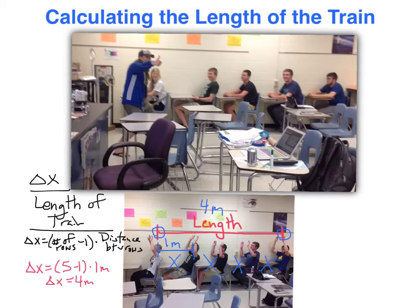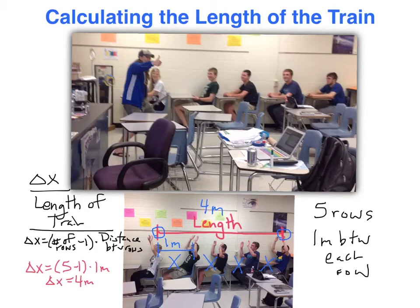To summarize: delta x equals the number of rows minus one, times the distance or gap between each row. In our situation, five rows minus one times one meter gives us four times one — our length is four meters. So when you're collecting data as you're entering the station and getting into your train, you want to know the number of rows and the spacing between each row. Those are the two data points you'll want to collect.